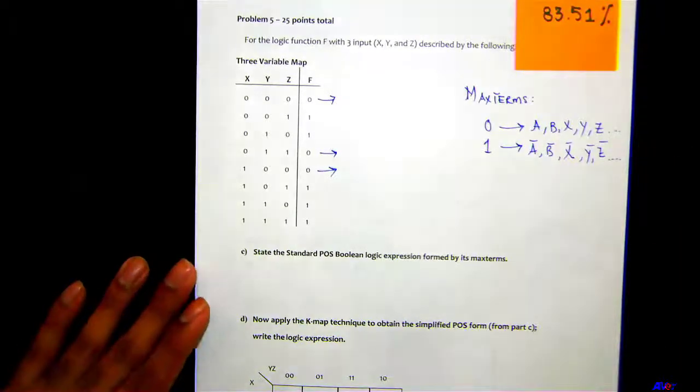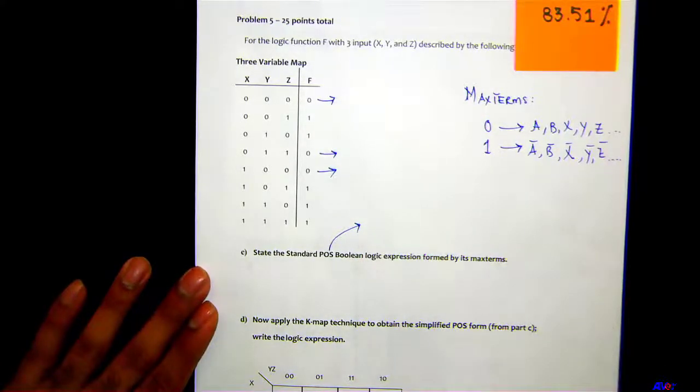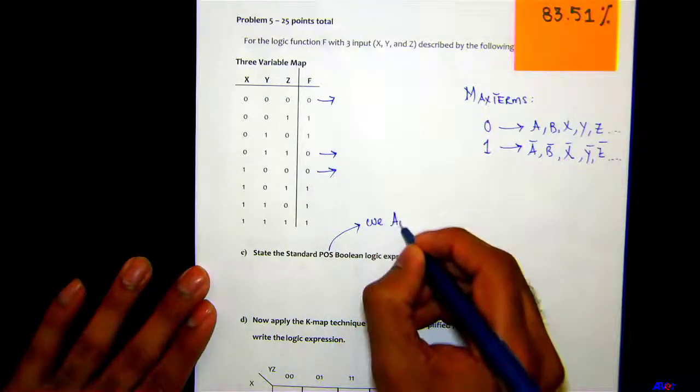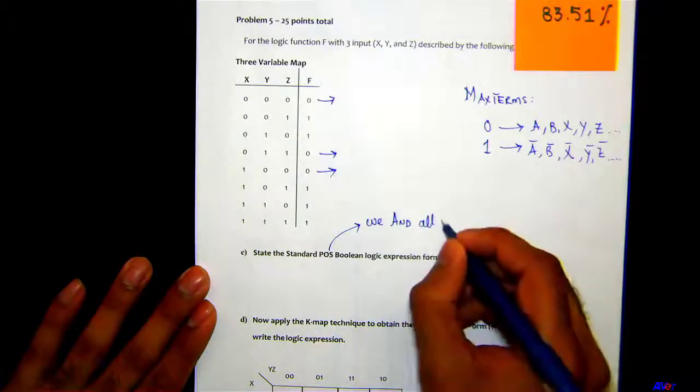And what we do in a POS for a Boolean expression—what do we do? We actually AND them. We AND all the individual sums.